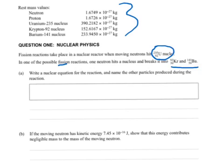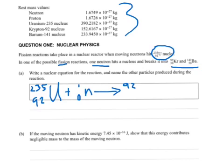Part A is write a nuclear equation for the reaction and name the other particles produced during the reaction. So going into this, we've clearly got our 235 uranium-92, and we've sent a neutron, one neutron hits a nucleus, so 1, 0, neutron. And from this, we end up with 92, 36 krypton plus 141, 56 barium. And there's going to be something else to make it all add up nicely.